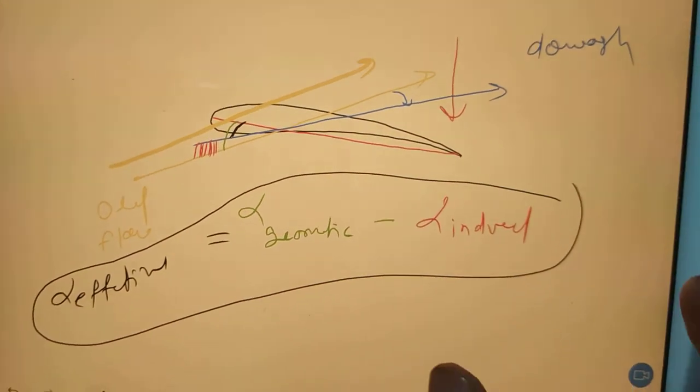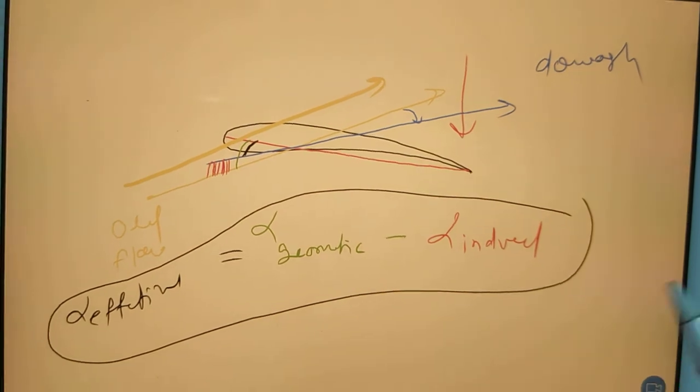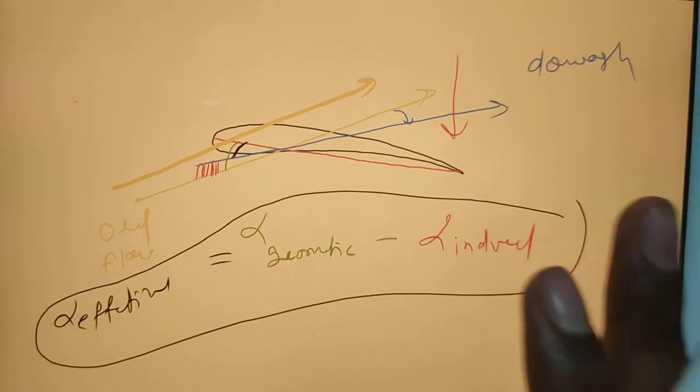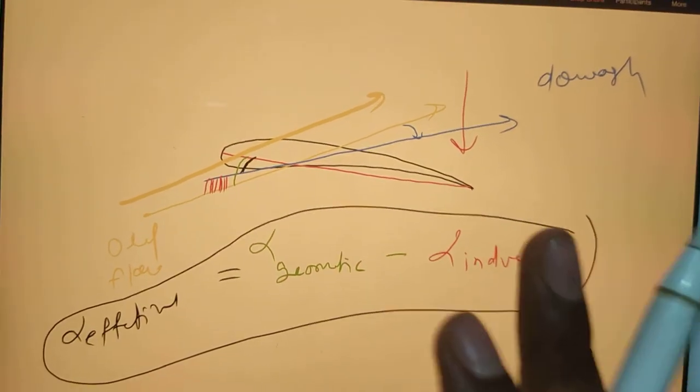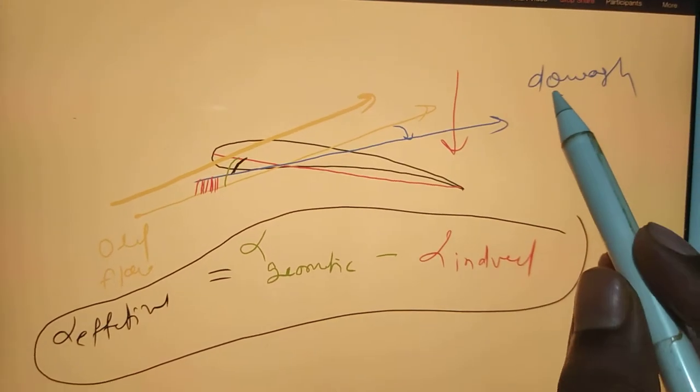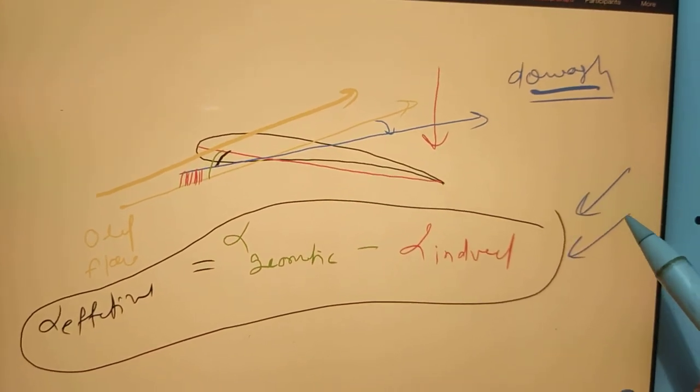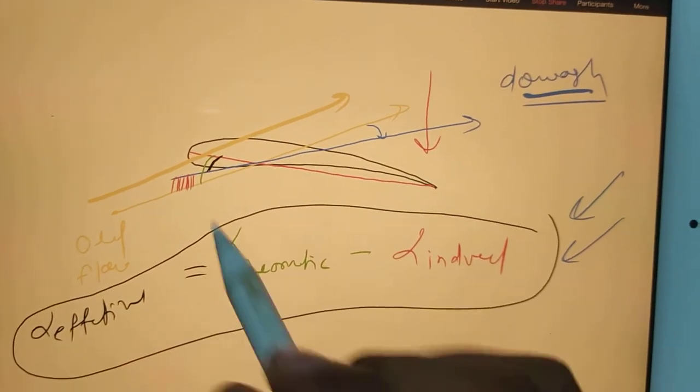Downwash - actually we have another term also, that is upwash. Like when I was teaching you stability, whenever there's a roll, one wing will experience upwash and one will experience downwash. Right now for downwash, I am explaining alpha effective, alpha induced, and alpha geometric. For that purpose I have taken the